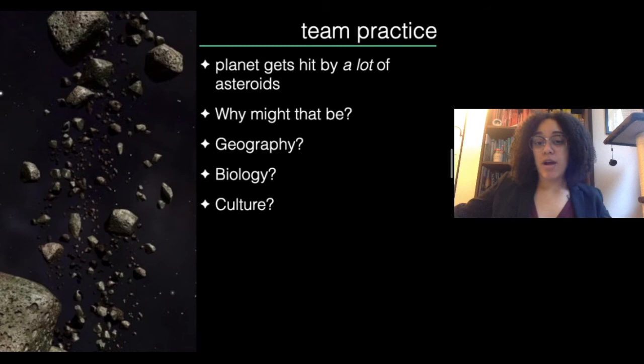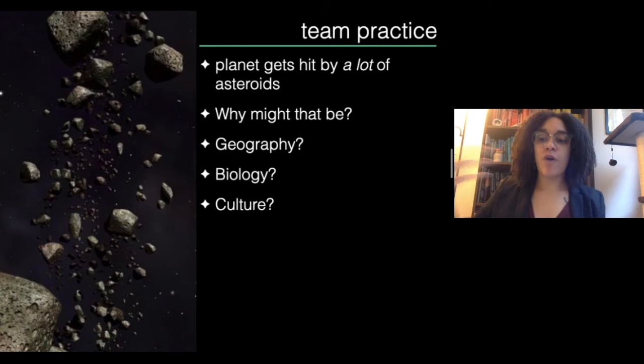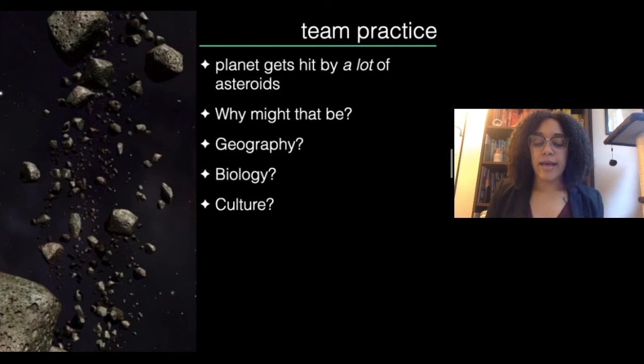Maybe your idea is something else — something magical. An example of something magical might be that these aren't asteroids at all. In fact, there's a race of giants who live over the horizon in a mountainous area, and one of the things they feel compelled to do is break up the mountains around them and throw them as far as they can. So that looks like a lot of asteroids hitting other parts of the planet.